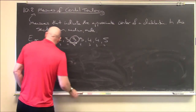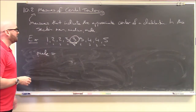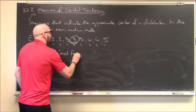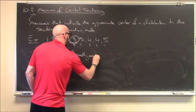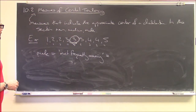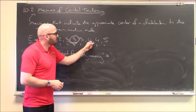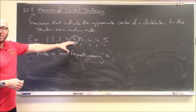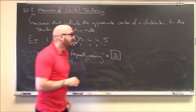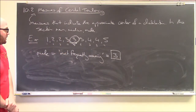Last up, we've got the mode — a less commonly used measure of central tendency. The mode is the most frequently occurring number. In this list: 1 appears once, 2 appears twice, 3 appears 3 times, 4 appears twice, and 5 appears once. So 3 is the most frequently occurring number — therefore 3 is the mode. For this sample, the mean, median, and mode were all the same number: 3. But they don't have to be.